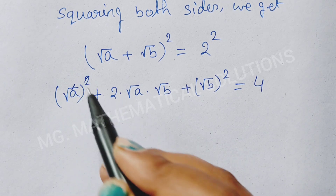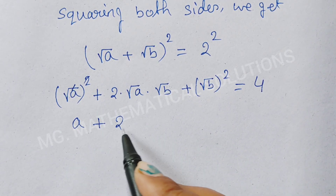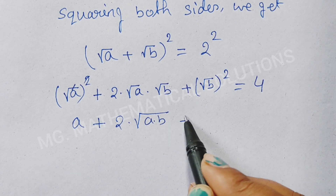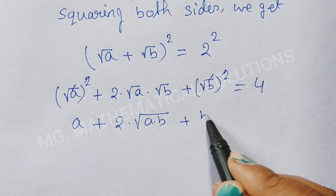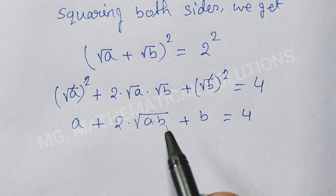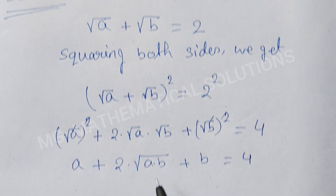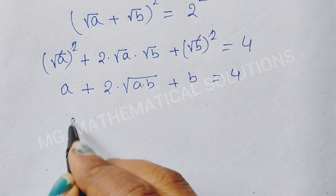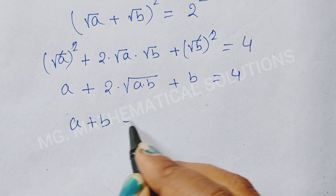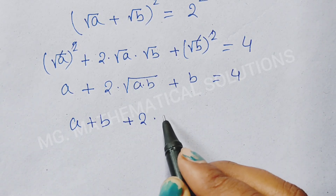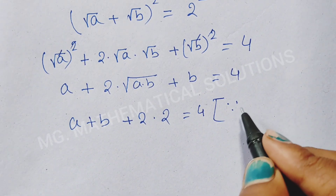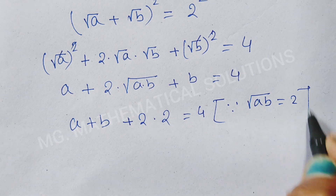Square and root cancel, so a plus 2 times root of a times b plus b equal to 4. Now we put the value of root of ab — given that root of ab equal to 2. So a plus b plus 2 times root of ab, which is 2, equal to 4.